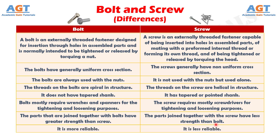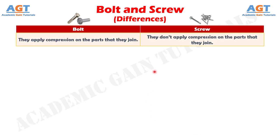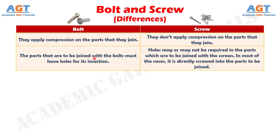Number 8: A bolt is more reliable, whereas a screw is less reliable. Number 9: Bolts apply compression on the parts that they join, whereas screws don't apply compression on the parts that they join. Number 10: Parts to be joined with bolts must have holes for insertion, whereas holes may or may not be required for parts joined with screws. In most cases, it is directly screwed into the parts to be joined.